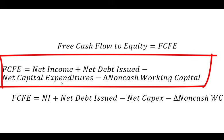Then we subtract net capital expenditures. In the U.S., accounting rules are such that when you buy a factory or have any kind of capital expenditure, it is not going to be an expense right away — it's going to be depreciated very slowly over time as that asset is used up. Because of that, we adjust that accounting ourselves: we subtract the capital expenditures, add back the depreciation expense, and then subtract the change in non-cash working capital.